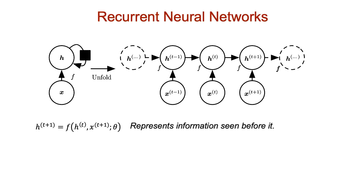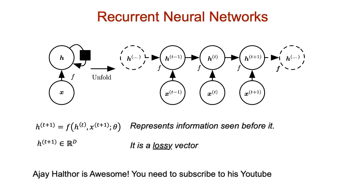h of t plus 1 represents information seen before it. But since h of t plus 1 is a fixed length vector, and the number of inputs before it can be any number, h of t plus 1 doesn't remember everything it has seen before. So it is important to determine what to remember and what to forget. For example, if we have a network to predict the next word in a sequence of words, all information from the beginning may not be important. That said, what is retained and what is forgotten can be determined based on a function f.